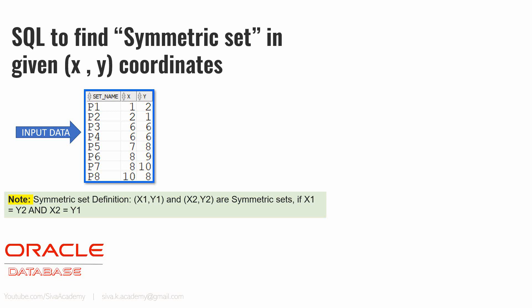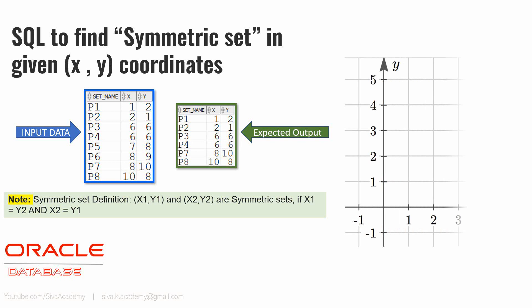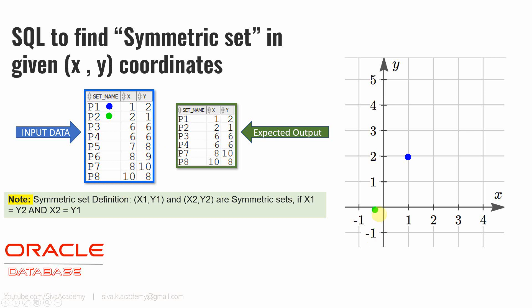In fact, this is one such question. Now let's see how to visually represent this question and understand. Suppose we want to plot P1 and P2 on a graph. Let's plot P1 — X is 1 and Y is 2 — so we plot it here. Similarly for P2, X is 2 and Y is 1, so we plot it here.